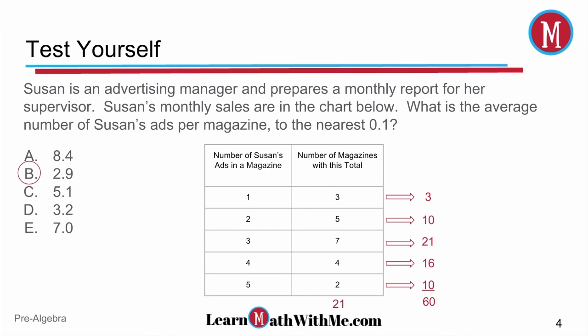Now let's look at how many magazines she has ads in. We add up that column and we get 21. So she has 60 total ads in 21 magazines. We'll just take those two numbers, divide 60 over 21, and we get 2.9 as our average number of ads per magazine.